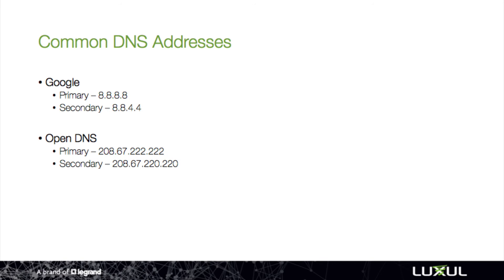If you're in a situation where the network continually loses connection to the DNS servers, or you want to be proactive and set it up so that the likelihood of that happening is greatly reduced, you can set specific DNS addresses inside the router.